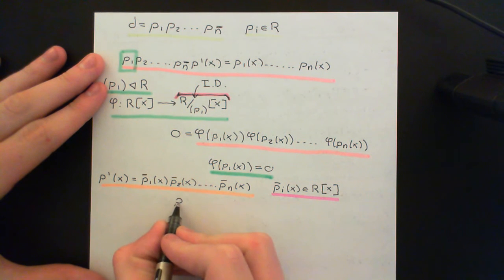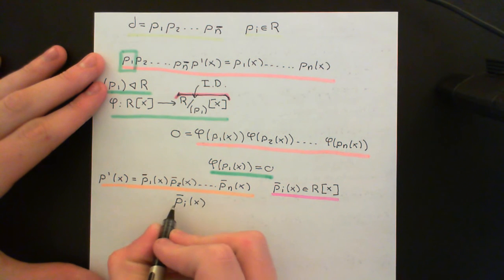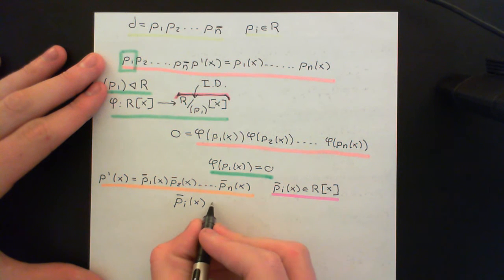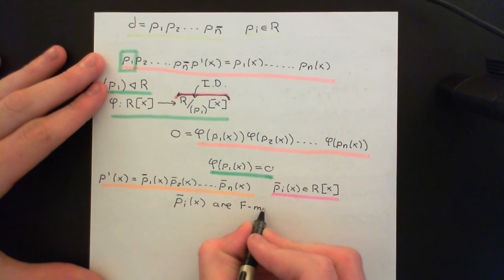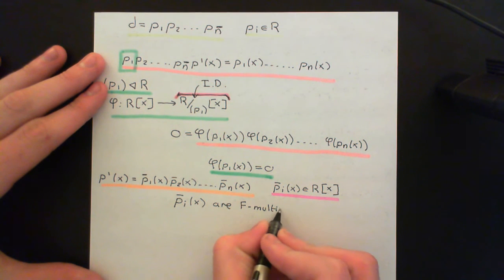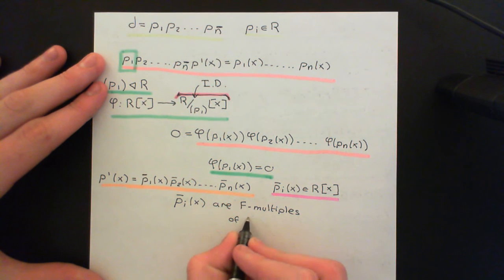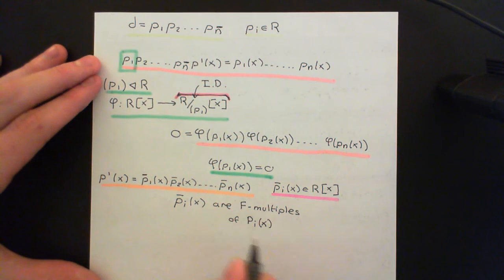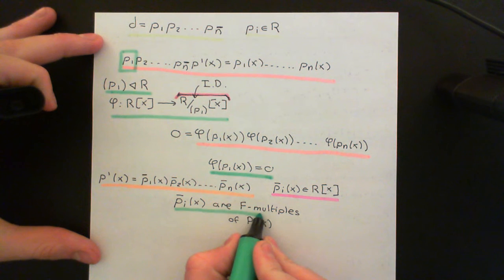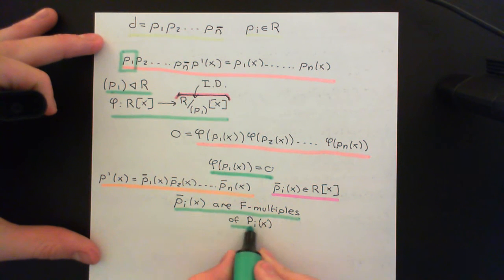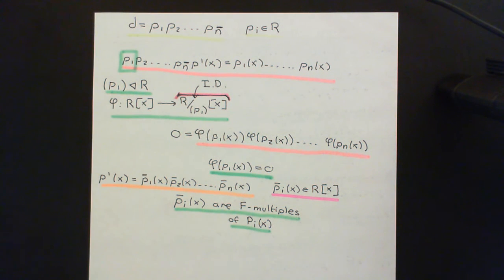So in fact, all we've actually done to those initial polynomials, the capital Pᵢ(x)'s, to turn them into the lowercase p̄ᵢ(x)'s, is multiply them by elements of the fraction field — so these have just been multiplied by fractions. I want to put a note of that; it's going to become important. So these p̄ᵢ(x)'s are F-multiples of the capital Pᵢ(x). We haven't really changed them that much; we've just multiplied them by some element of the fraction field effectively. This is also going to be important in proving that these are still irreducible in the ring of polynomials over the unique factorisation domain.